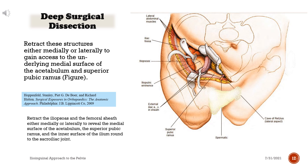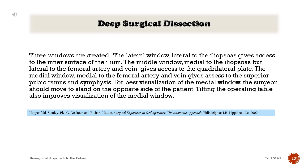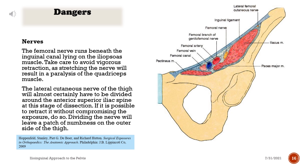Retract the iliopsoas and the femoral sheath either medially or laterally to reveal the medial surface of the acetabulum, the superior pubic ramus, and the inner surface of the ilium round to the sacroiliac joint. Three windows are created: the lateral window, lateral to the iliopsoas, gives access to the inner surface of the ilium; the middle window, medial to the iliopsoas but lateral to the femoral vessels, gives access to the superior pubic ramus and symphysis. For best visualization of the medial window, the surgeon should move to stand on the opposite side of the patient; tilting the operating table also improves visualization.